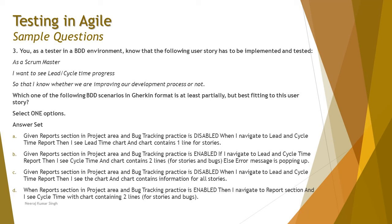Option C: Given report section in project area and bug tracking practice is disabled, When I navigate to lead and cycle time report, Then I see the chart and chart contains information for all stories. This is also wrong as there are not enough details to develop and test the spec — it just says 'all stories' without specifying what kind. Option D: When resolve report section in project area and bug tracking practice is enabled, Then I navigate to report section and see cycle time with chart containing two lines for stories and bugs. This is wrong because the 'Given' element of Gherkin is missing.